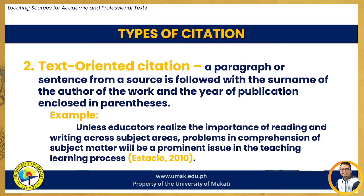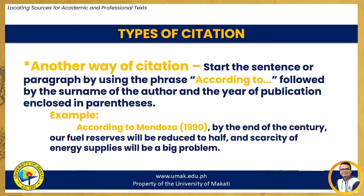With text-oriented citation, you begin with a paragraph or sentence from a source, followed by the surname of the author and the year of publication enclosed in parentheses. For example: 'Unless educators realize the importance of reading and writing across subject areas, problems in comprehension of subject matter will be a prominent issue in the teaching-learning process.' Another way of citing is by starting the sentence using the phrase 'according to,' followed by the surname of the author and year in parentheses. For example: According to Mendoza (1990), by the end of the century, our fuel reserves will be reduced to half, and scarcity of energy supplies will be a big problem.